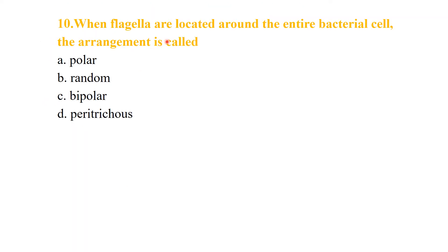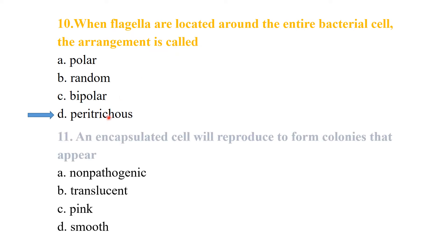When flagella are located around the entire bacterial cell, the arrangement is called peritrichous. An encapsulated cell will reproduce to form colonies that appear mucoid or smooth.